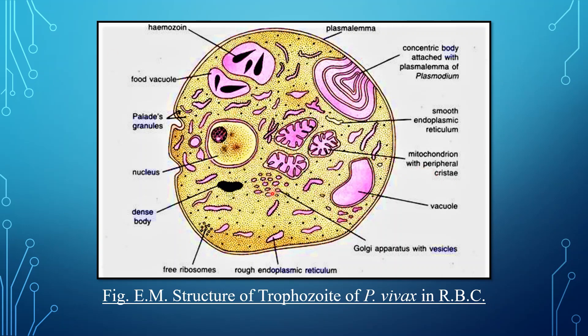The cytoplasm also contains Golgi bodies, which are composed of small vesicles arranged in rows. Many pinocytic vesicles are present in the cytoplasm, which serve as food vacuoles. These may contain hemozoin.